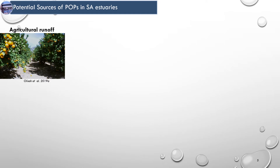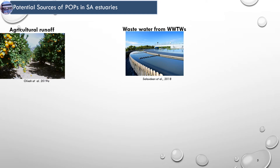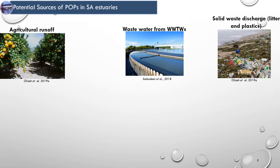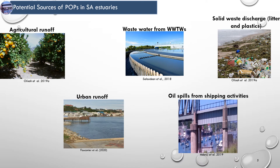Another source of POPs in South African estuaries is wastewater from wastewater treatment works. It was reported in the South African National Biodiversity Report of 2018 that approximately 840 million litres of wastewater is emptied into South African estuaries per day. High amounts of phthalates have been detected in samples from wastewater treatment plants located in the Eastern Cape province. Other sources include solid waste discharge composed of litter and plastics, urban runoff, and effluents from shipping activities.